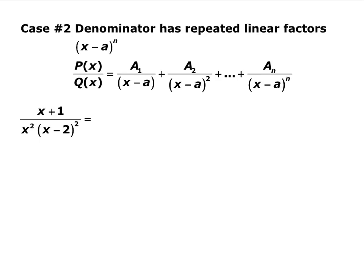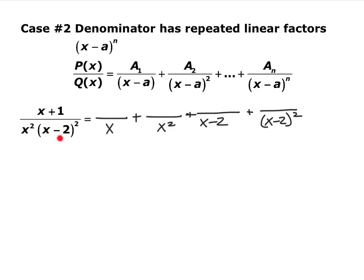The second case is repeated linear factors — a linear term that's been squared. You have to include every possible power of that repeated factor up to its highest power. So if you have x squared, you need x and x squared. If you have x minus 2 quantity squared, you need x minus 2 and x minus 2 squared. If it were cubed, you'd need all three powers.